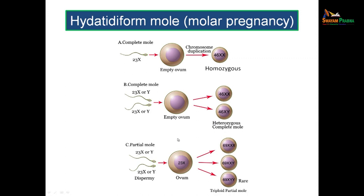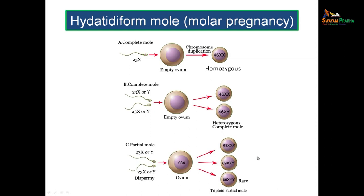To summarize, we have discussed the placenta — its structure, function, development, chorionic villi stages, placental barrier, term villus formation, umbilical cord contents, variations in shape, cord attachment and penetration depth — along with applied aspects. That is all about the topic placenta. Thank you.